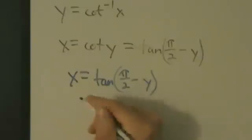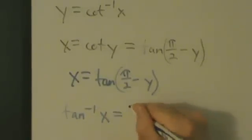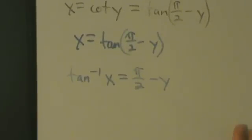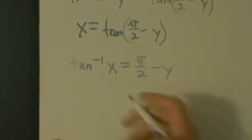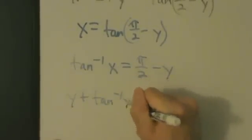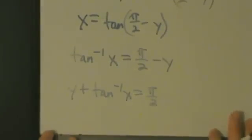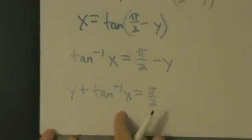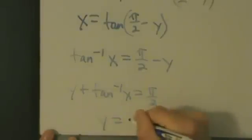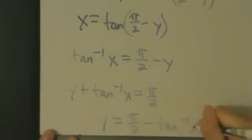If x equals tangent of that, then that equals inverse tangent of x. So inverse tangent of x equals pi over 2 minus y. Now let's add y to both sides, giving us y plus inverse tangent of x equals pi over 2. Subtracting inverse tangent of x from both sides gives y equals pi over 2 minus inverse tangent of x.